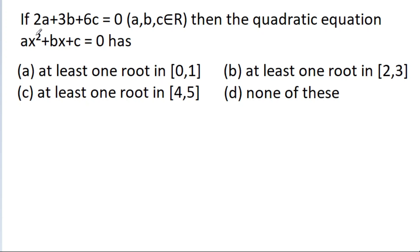In this video, we have given that 2a plus 3b plus 6c is equal to 0, where a, b, and c are real numbers. Then the quadratic equation ax squared plus bx plus c is equal to 0 has — and we have to choose the correct option from the four options given.